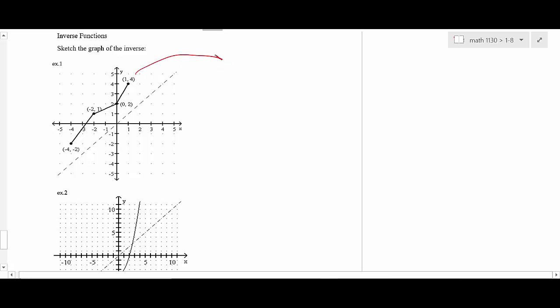Like you take this point 1, 4, and you turn it around. And then you plot it. So that point would just be 4, 1. Like that. Take the point 0, 2. You turn it around. So that's going to be 2, 0. So you plot that. And you kind of connect the dots as you go.